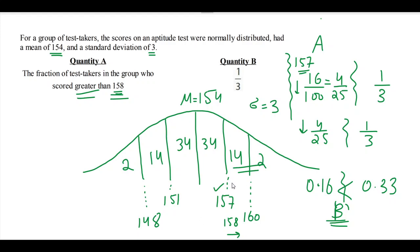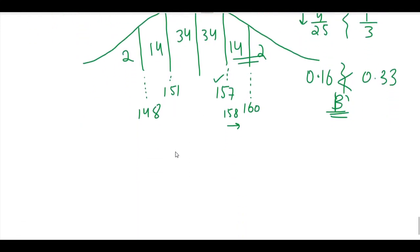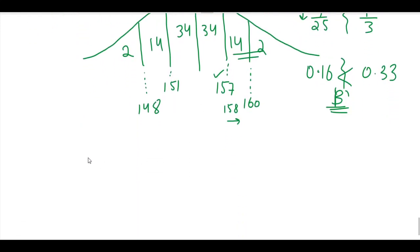Yeah, because the author is saying greater than 158, so I don't have a direct relationship for 158. So I just use 157 and kind of work my way out. Why? Because I knew, let's try to visualize this a little bit.